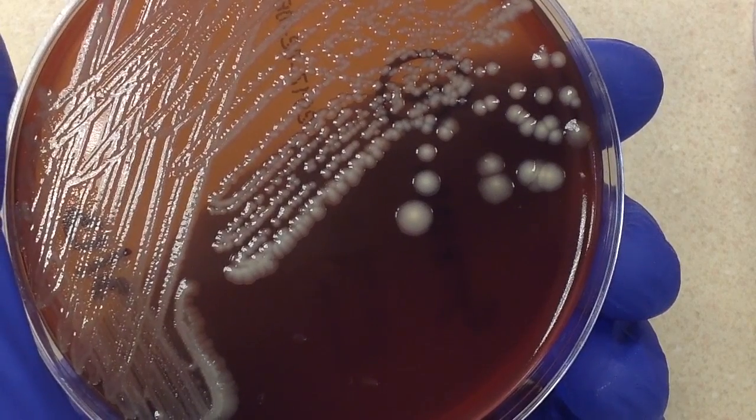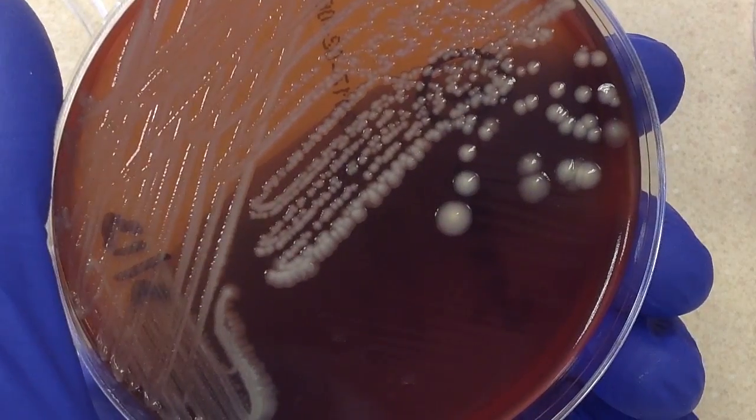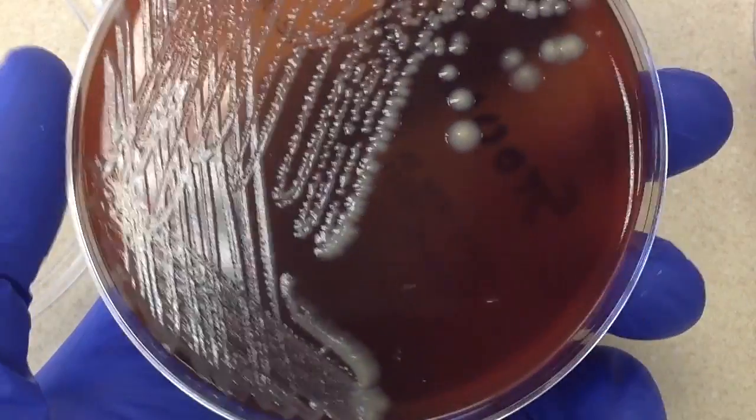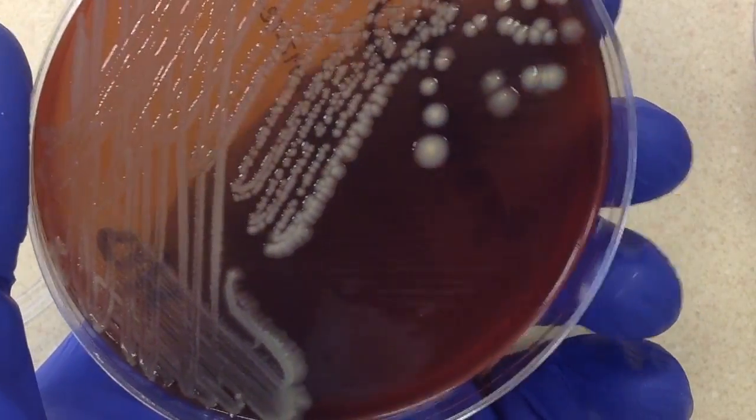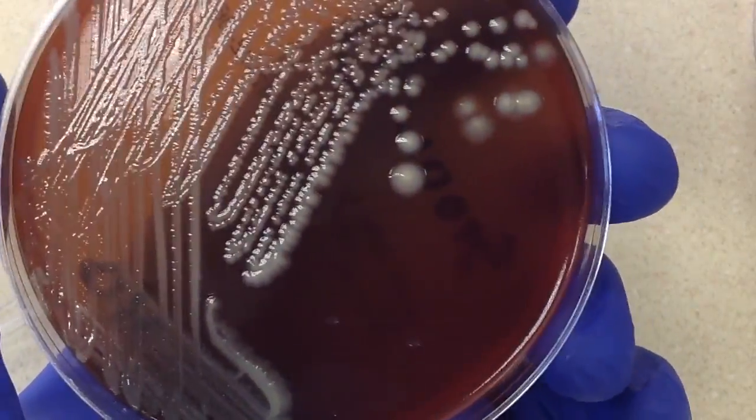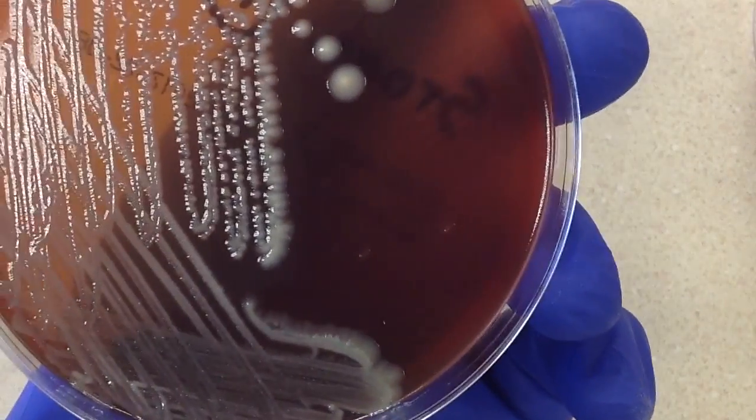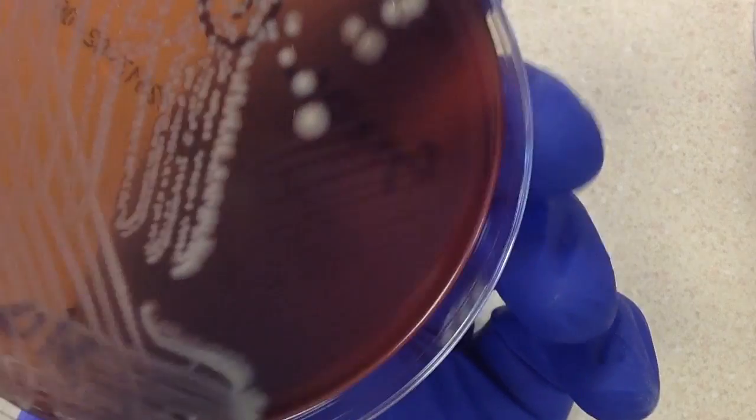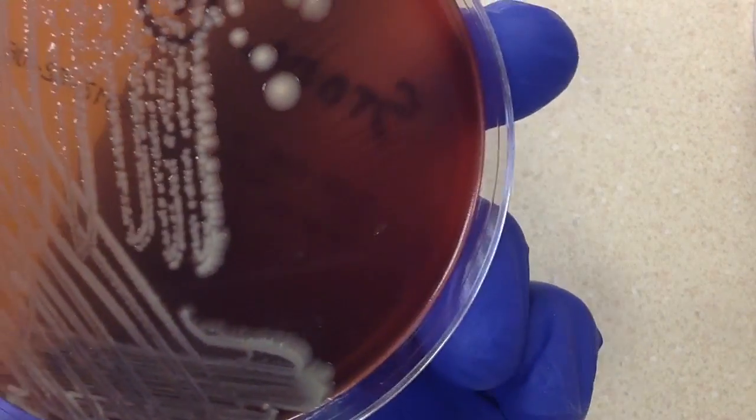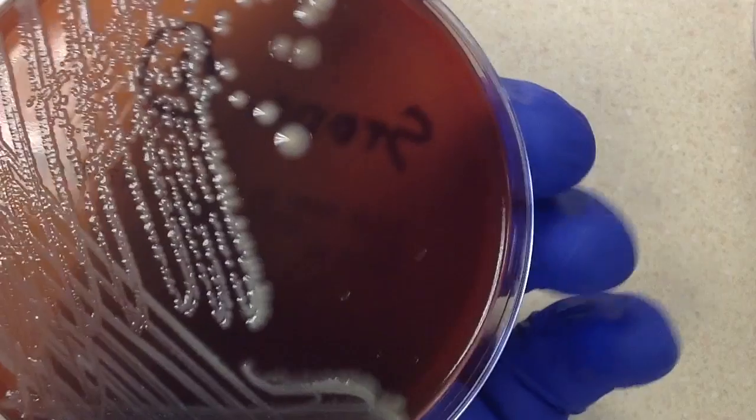Stool is definitely a culture site that has normal flora. So a lot of gram-negative rods from the family of Enterobacteriaceae. We can see other things in there, Enterococcus species, staph. It's really a mixed bag of different organisms.